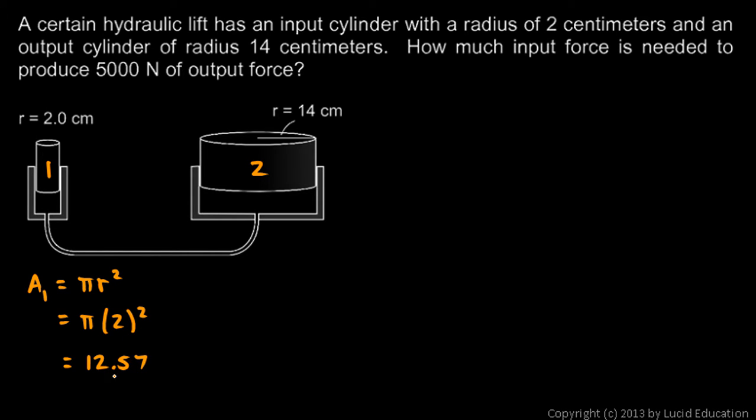Over here, cylinder 2 is a good bit larger, but it's the same formula, pi r squared. We just have a different value for r in this case. So this is pi times 14 centimeters squared, and you square the 14 and not the pi right here. This comes out to 615.8 square centimeters. And then we use these two numbers to calculate the ratio of the areas, and that will give us the mechanical advantage.